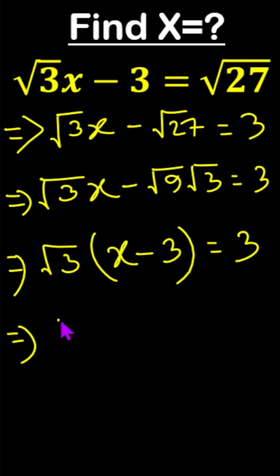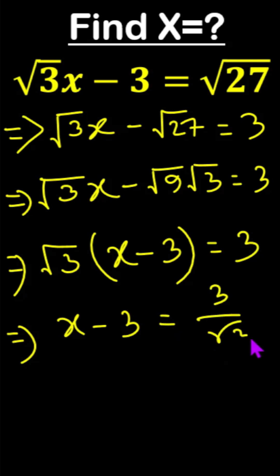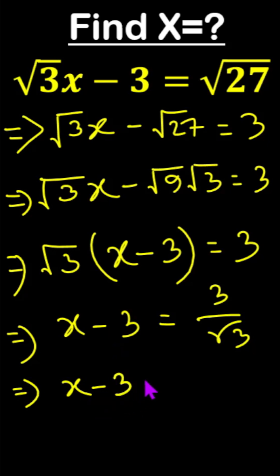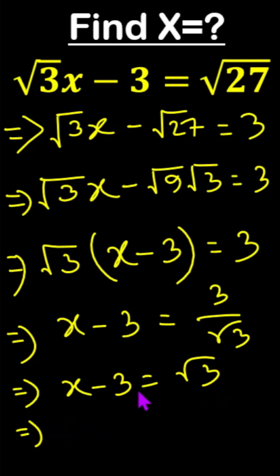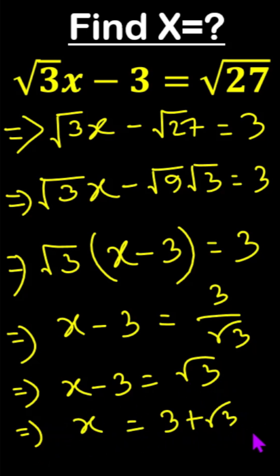Now x minus 3 equals 3 divided by root 3, which means root 3. We transfer this 3 to the right side, so x equals 3 plus root 3, and this is the answer.